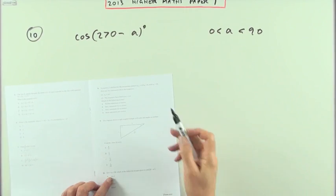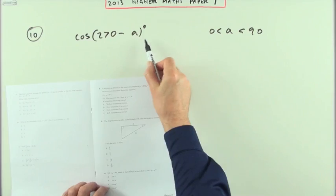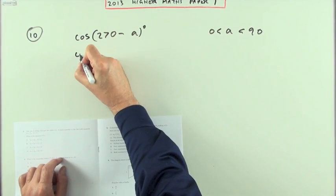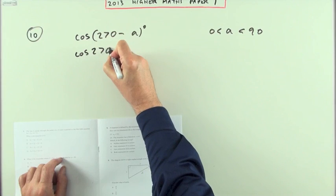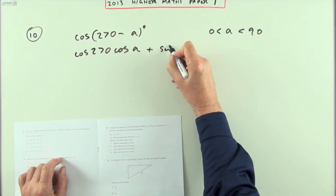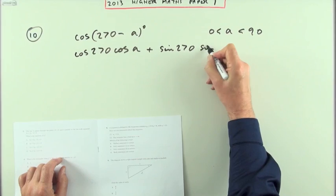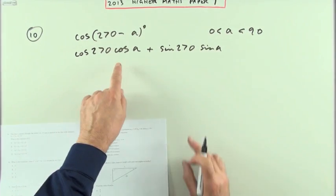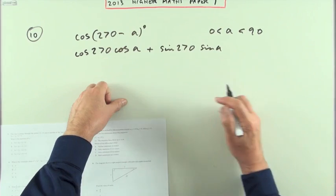Number 10: which of the following is equivalent to this expression? Just expand it. That'll be cos 270 cos a plus sine 270 sine a. Now what are the values of these? These are points that you get from the graph or critical points in the graph.